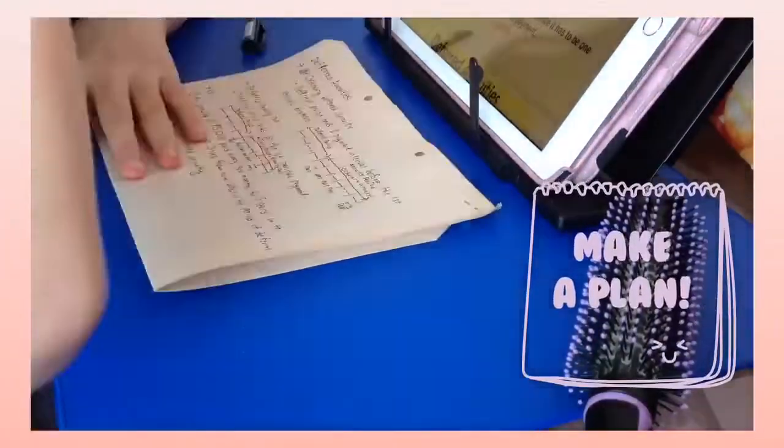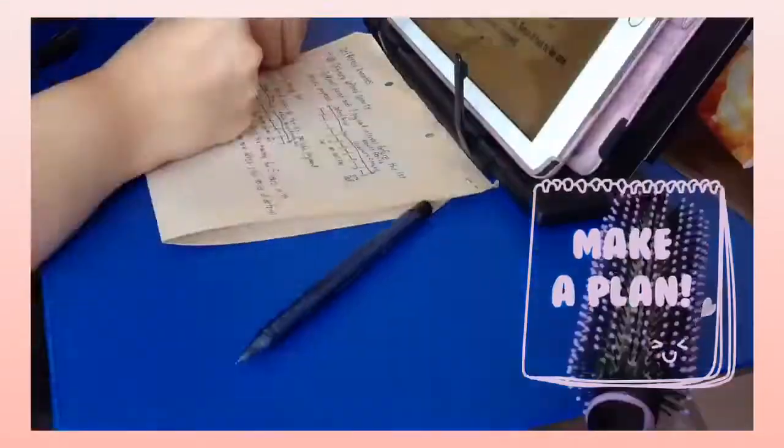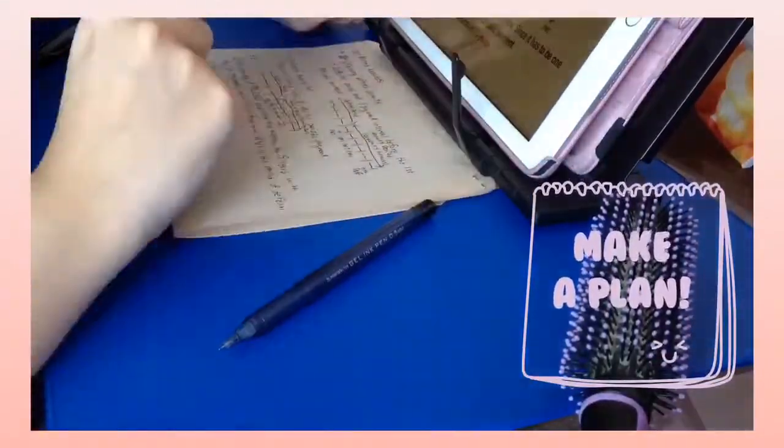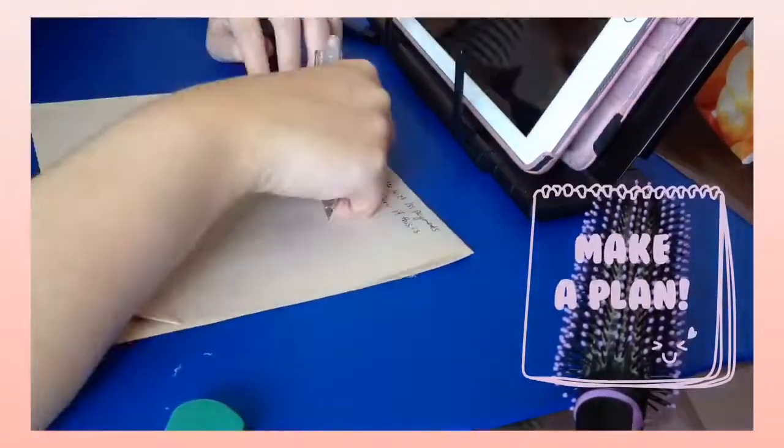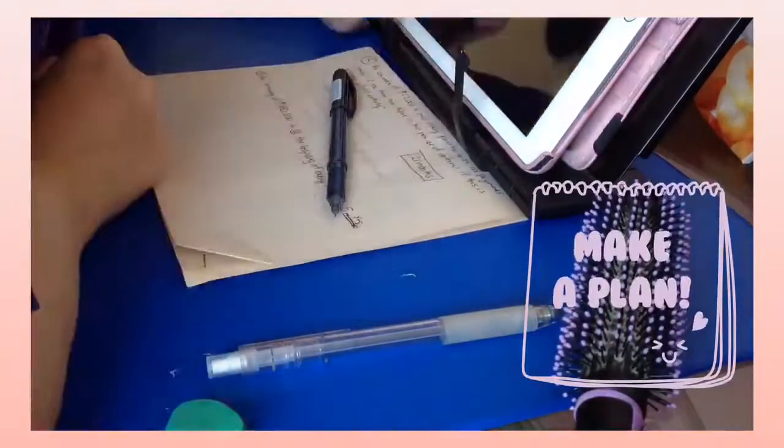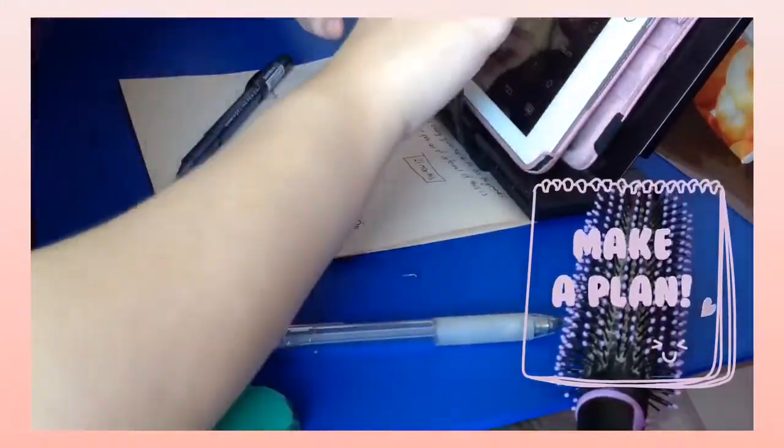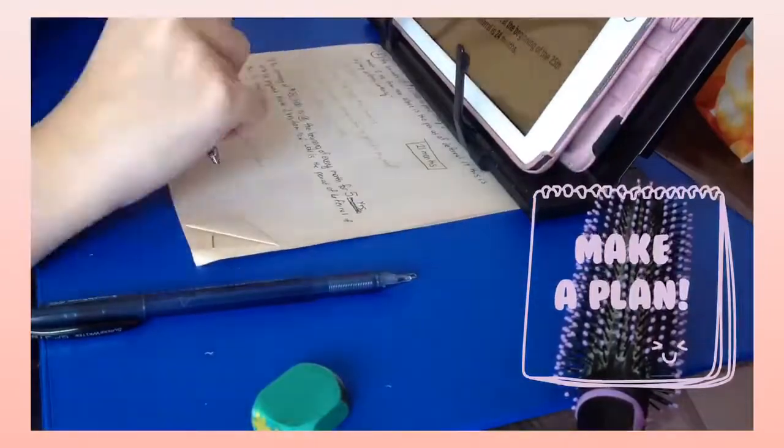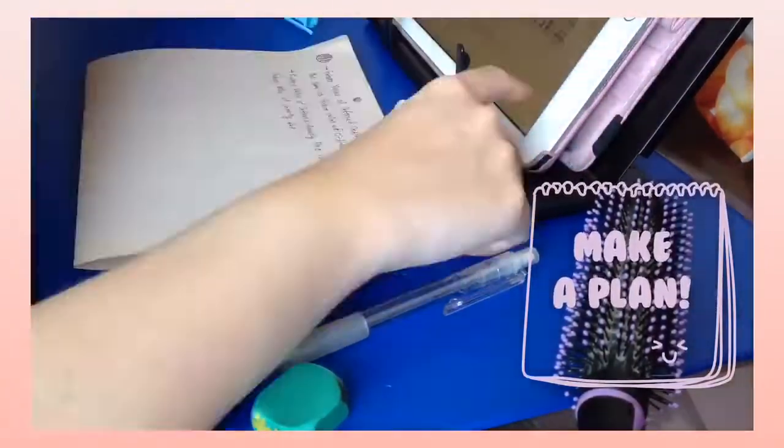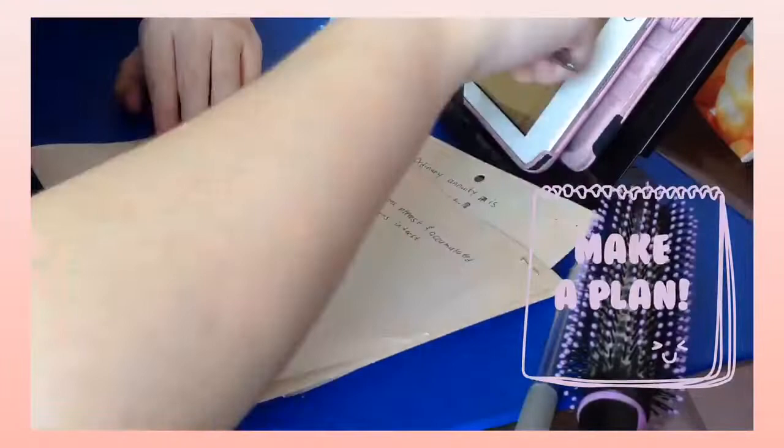My next tip is to make a plan. Oftentimes, people underestimate the power of planning, and this is why they will waste time thinking what they should do. I suggest you plan out your day either by doing time planning, where you schedule what you are supposed to do at what time, or you can just list down the things you need to get done today but not schedule what time you should start doing them.